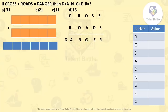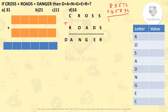CROSS plus ROADS is a five-digit number added to another five-digit number giving a six-digit answer, DANGER. Whenever we add two five-digit numbers and get a six-digit number, that six-digit number will always start from 1. For example, 83572 plus 95889 — if the answer is six digits, it definitely starts with 1. So the value of D is 1.